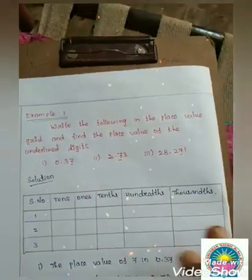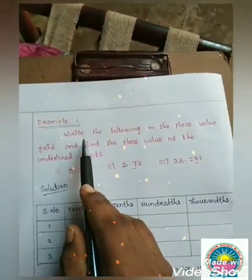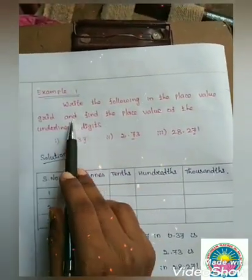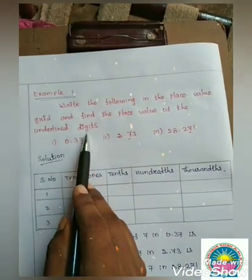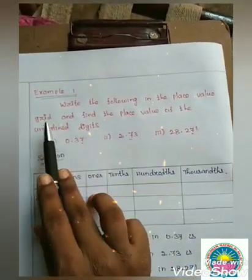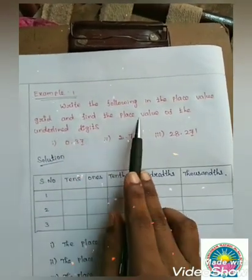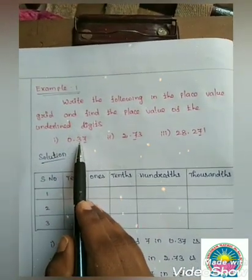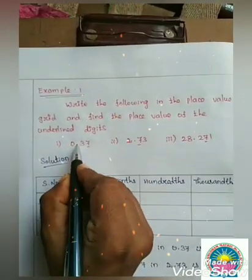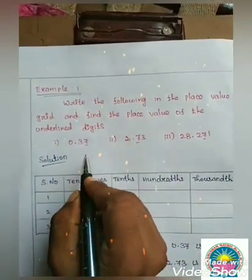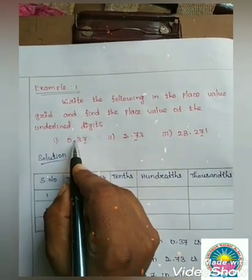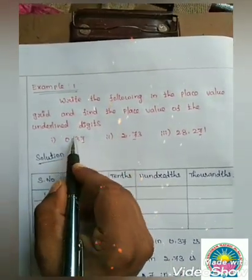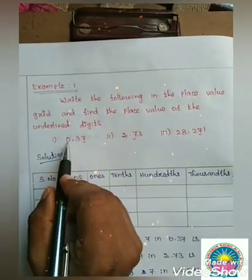Now it's a very easy lesson. Listen carefully. Example 1: Write the following in the place value grid and find the place value of the underlined digit. The place value grid has positions: to the right of the decimal point — tenths, hundredths, thousandths, ten-thousandths; to the left of the decimal point — ones. The first sum is 0.37.